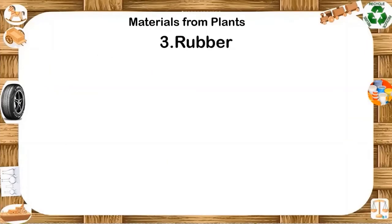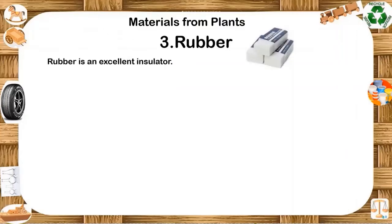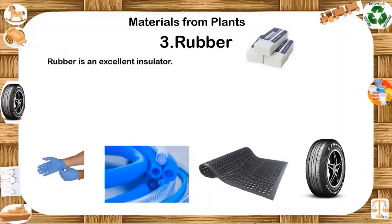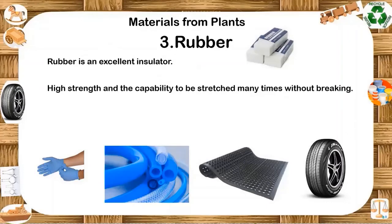Rubber can be easily molded into various shapes and sizes. Rubber is used to manufacture gardening tools, pipes and hoses, and for manufacturing tires for different vehicles. Rubber is an excellent insulator — it does not allow heat or electricity to pass. Because of this property, rubber is used to make handles for different tools in industries and household materials. It allows an excellent grip on watery surfaces, so rubber is used for manufacturing soles of shoes, gloves and other equipment for better grip. This is why it is also used for flooring purposes. It offers proper friction to the surface and can avoid accidents. The properties of rubber include high strength and the capability to be stretched many times without breaking.